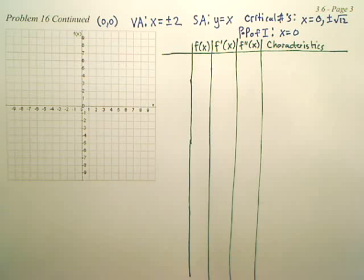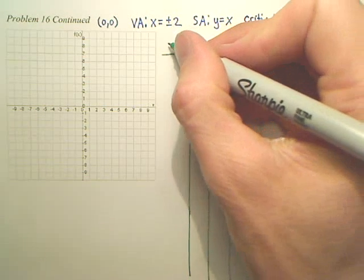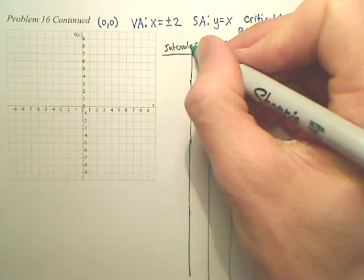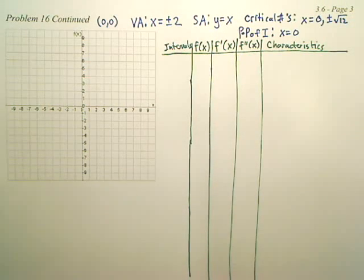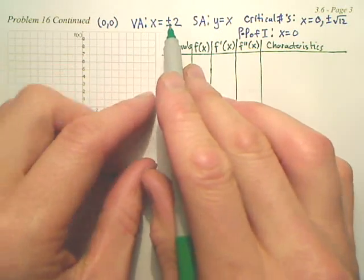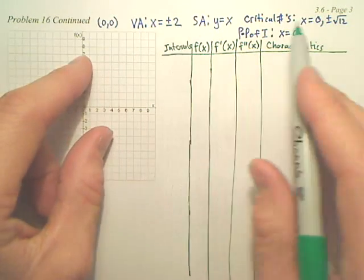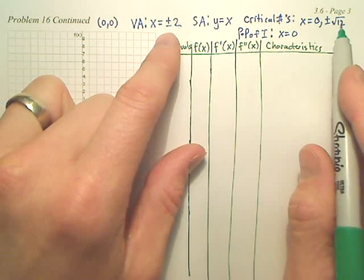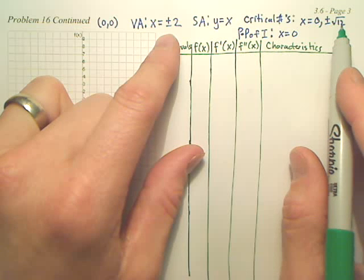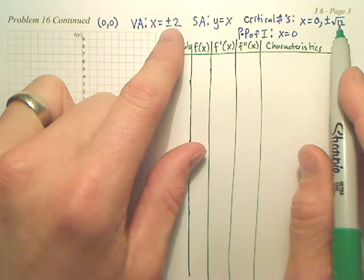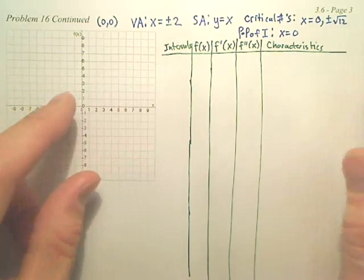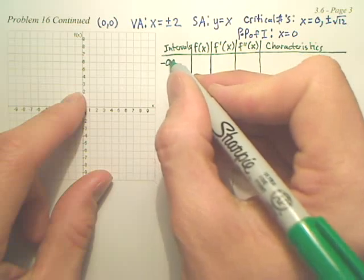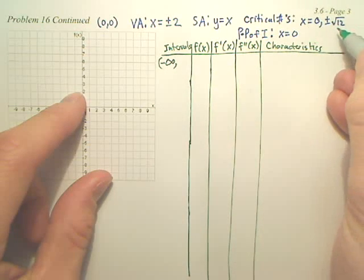So to do this, our intervals — looking at all my data, I have some vertical asymptotes which we're going to put in our intervals. I have some critical numbers and points of inflection. Looking at all this data, the square root of 12 is between the square root of 16 and the square root of 9 — 16 is 4, 9 is 3 — so it's bigger than 2. My first interval is going to go from negative infinity to probably negative square root 12.